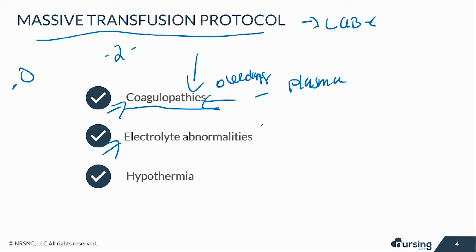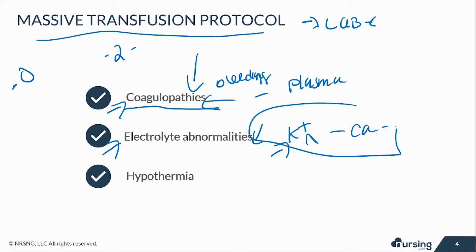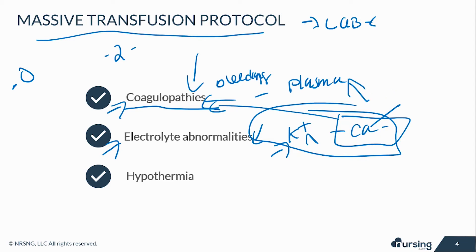You have to be able to monitor for electrolyte abnormalities. People who get massive blood transfusions are at high risk for potassium and calcium problems. Usually they can become hypocalcemic or hyperkalemic, so you have got to watch these. Remember that calcium has clotting factors and helps us clot up, so that's another reason why we start to bleed and another reason why we need plasma.